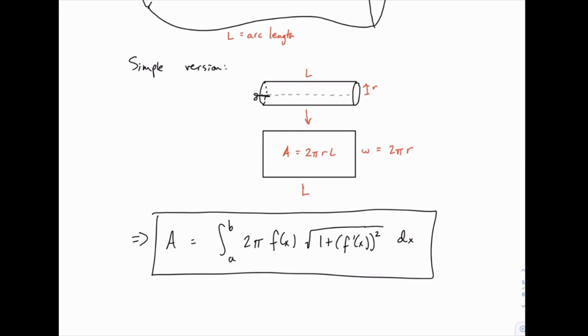But when it comes to memorizing this formula, it's helpful to recognize that it's really just 2πrL, and R is f(x), and L uses the part of the arc length formula. If you recognize that, it makes keeping track of this formula a lot easier to work with.